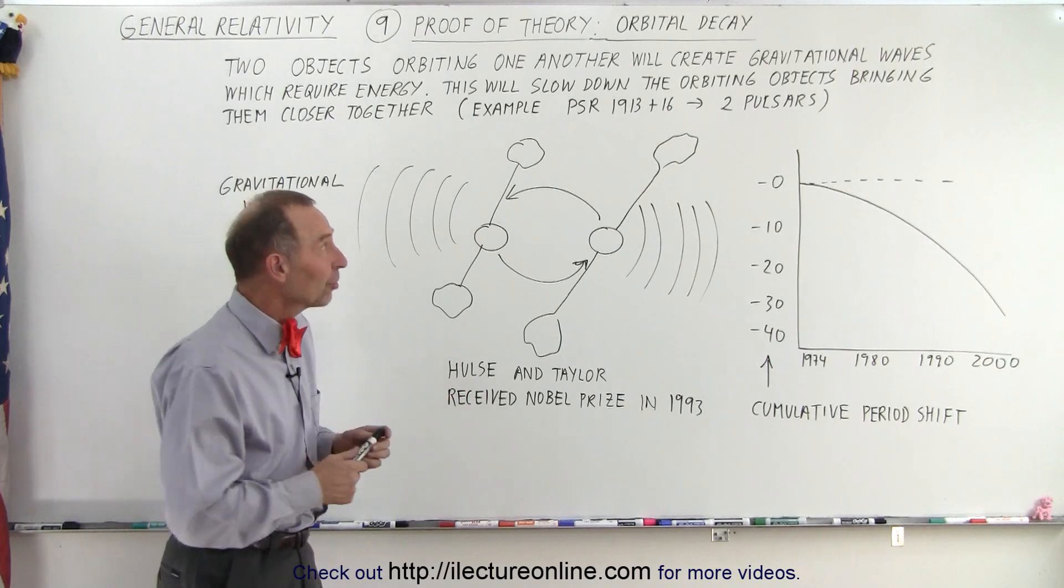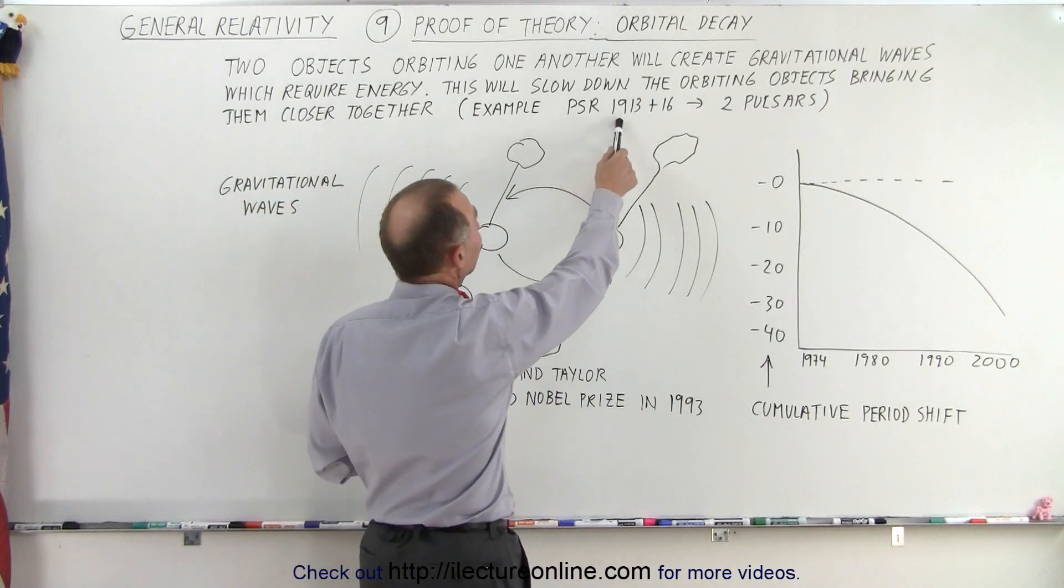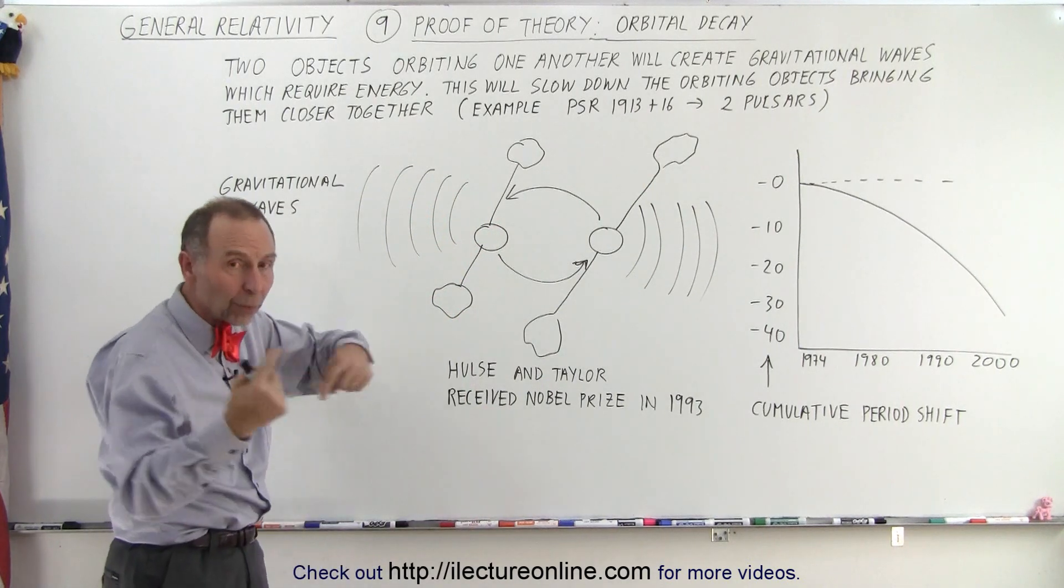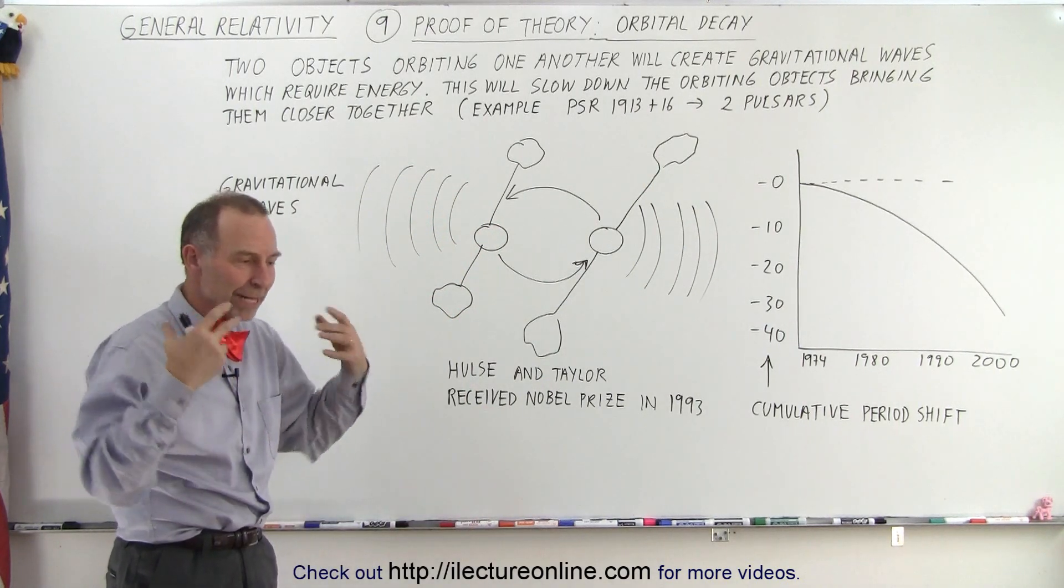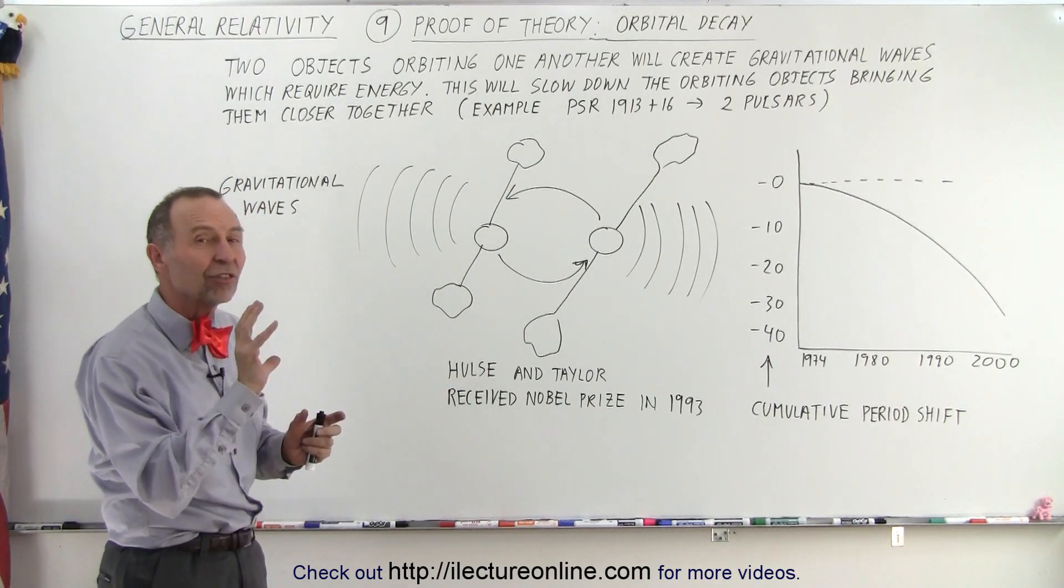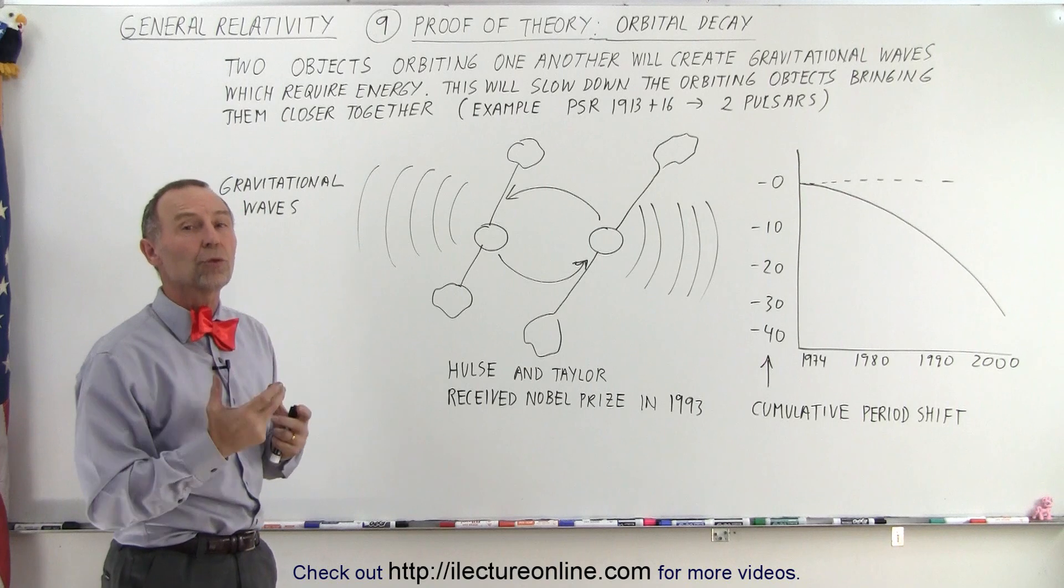Both of them, in that case, were pulsars, and they were called PSR 1913 plus 16. And as they were going around one another, they were emitting energy in the terms of gravitational waves, and it caused their pulsation to slow down.